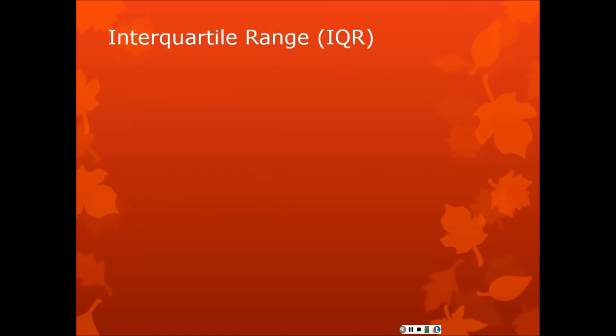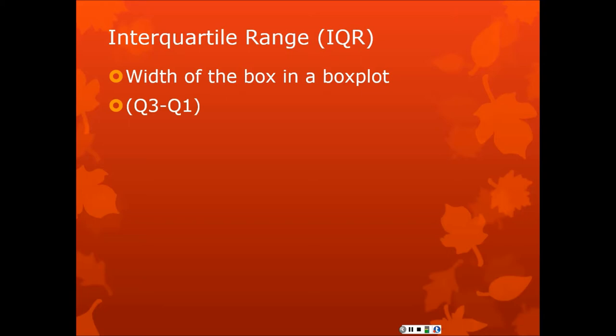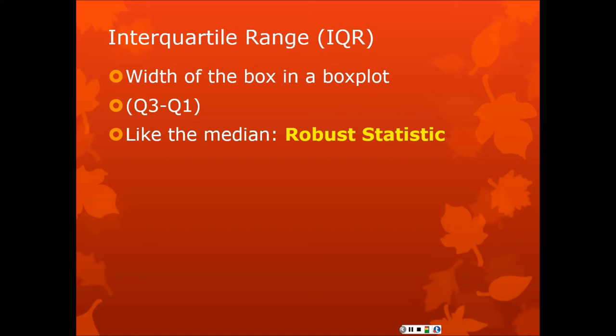The interquartile range is a much better measure — it's actually excellent and works in a lot of situations. It's just the width of the box in a box plot, which is Q3, the third quartile, minus Q1, the first quartile. Much like the median, because it's based on robust statistics, the interquartile range is a robust statistic. Quantiles — like quartiles, deciles, or quintiles — are robust to extreme scores.